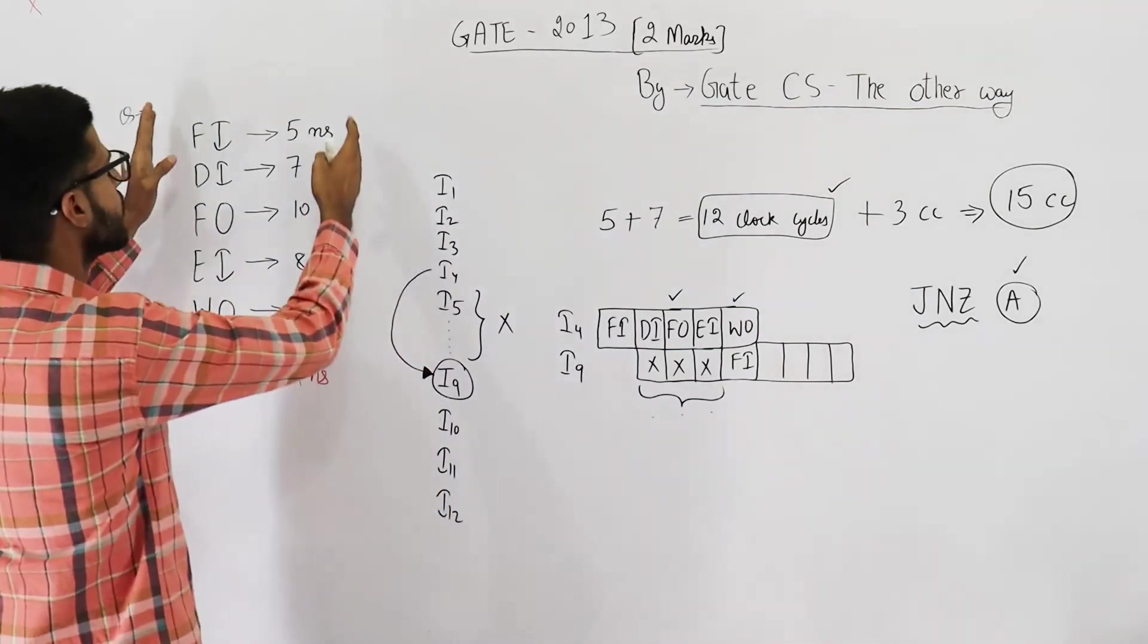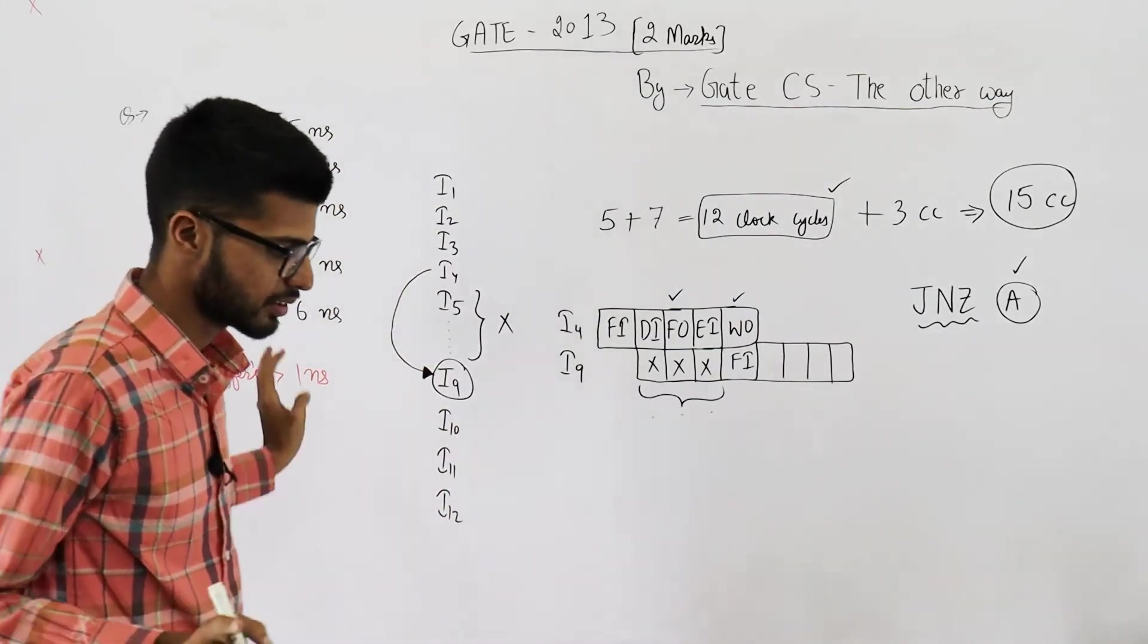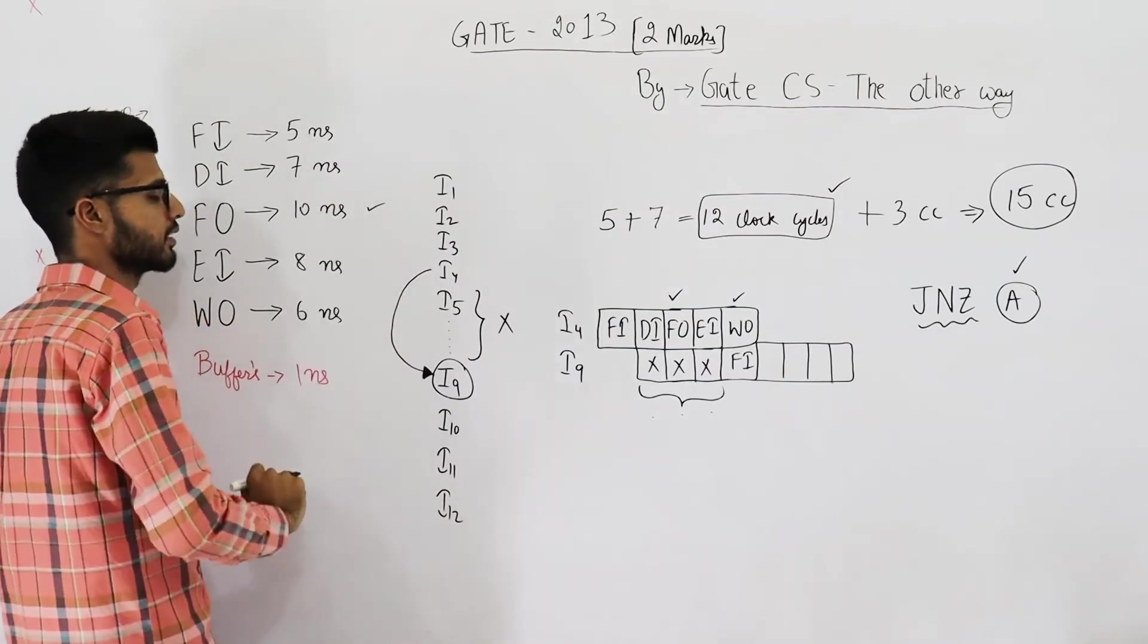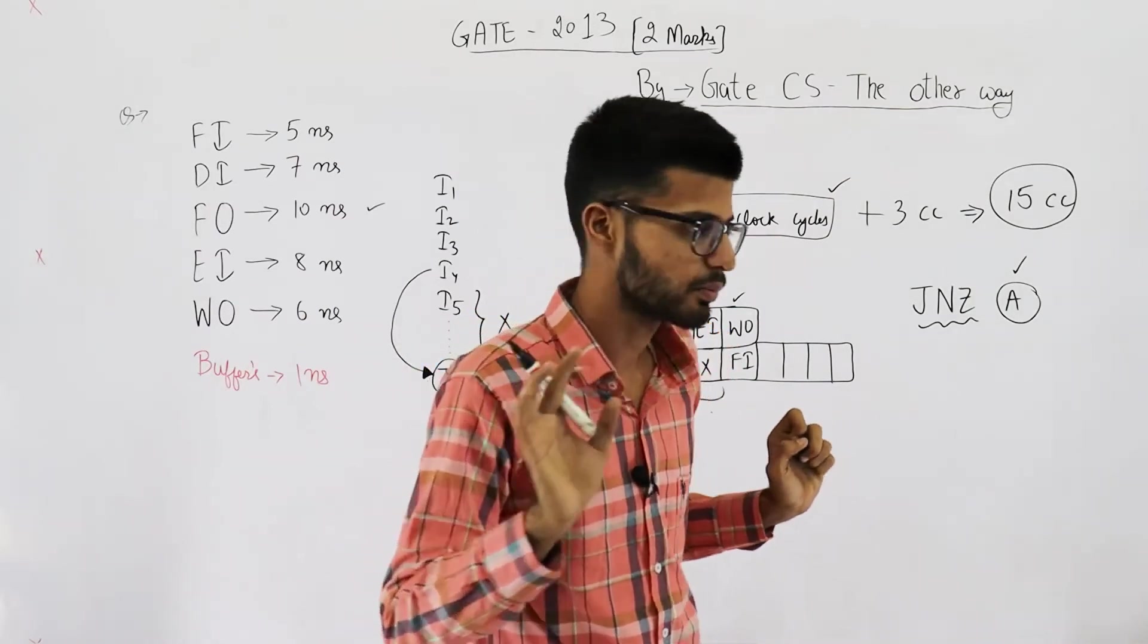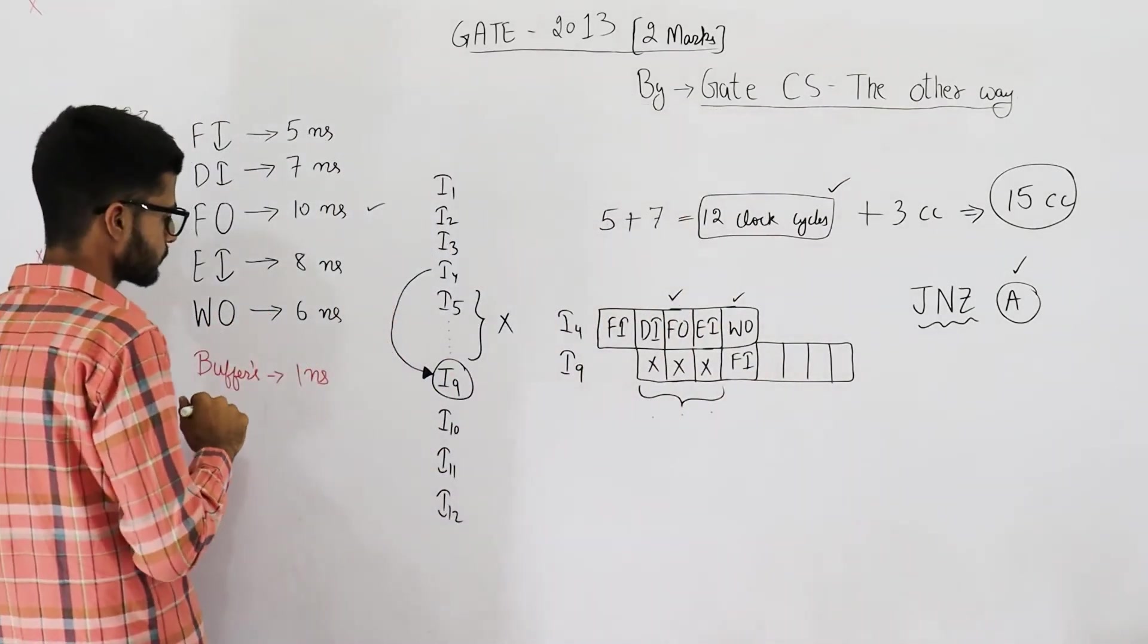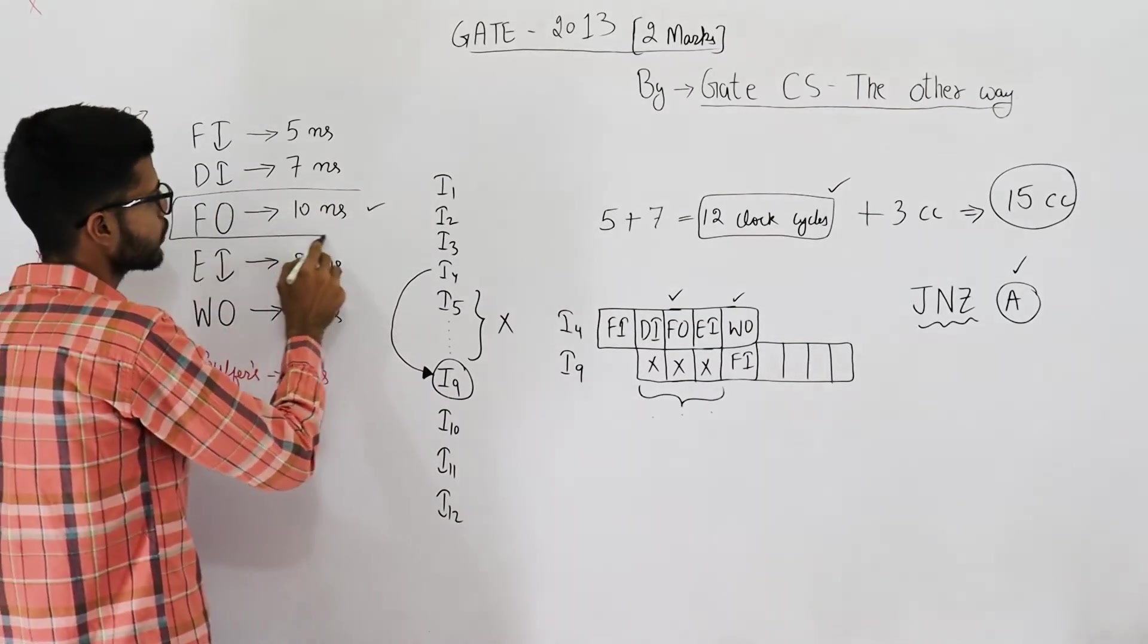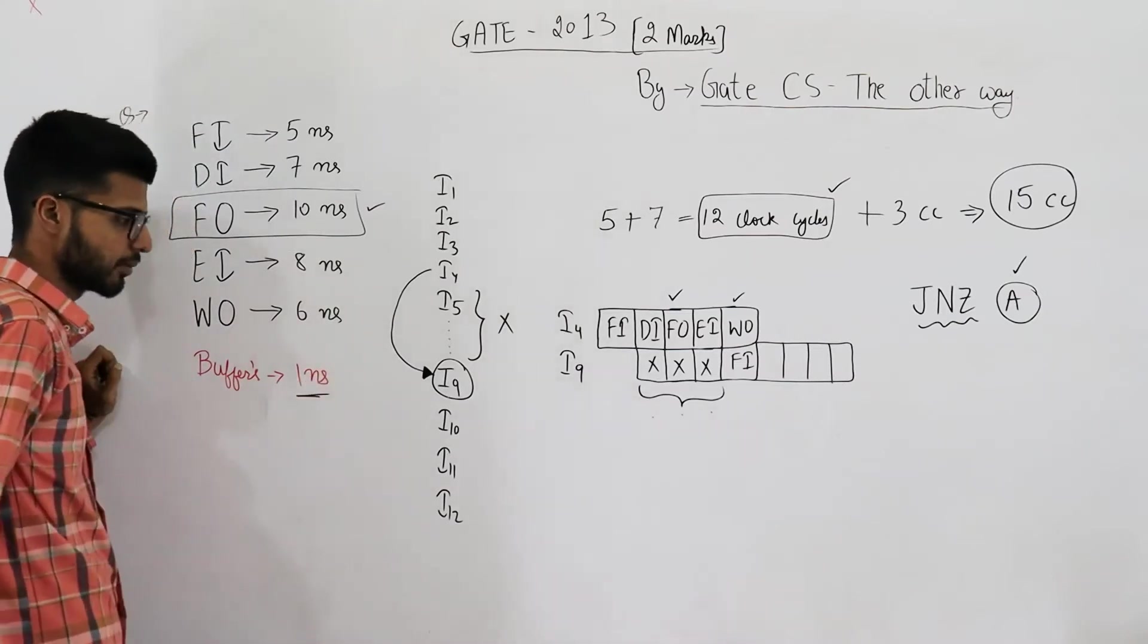So just try to calculate the time period of clock. Now I have discussed it a lot of times that we'll just consider the maximum out of these, the maximum stage delay. The reason is already discussed in most of the PYQ videos as well as my theory lectures. You please refer to one of those. So the time period of clock, or rather the effective stage delay for each stage, we'll consider it to be 10 nanoseconds plus one nanosecond taken by the buffers.